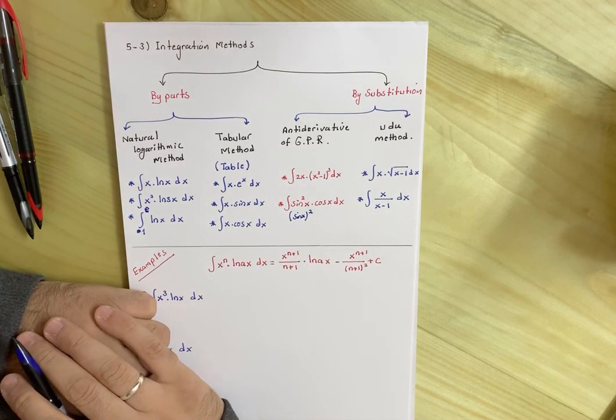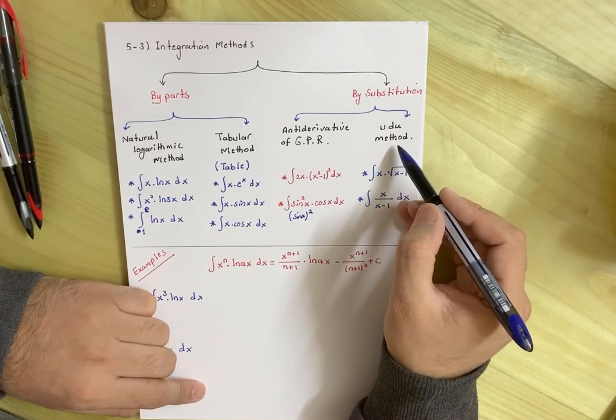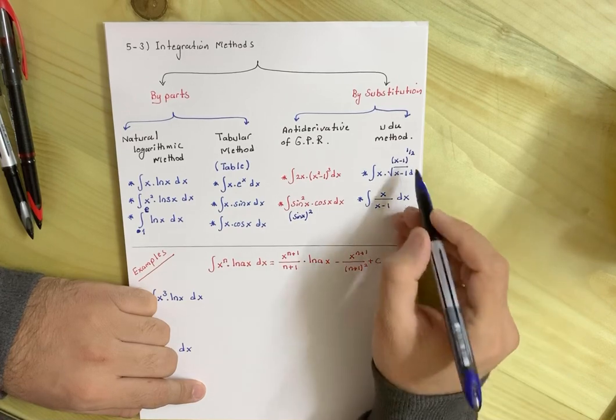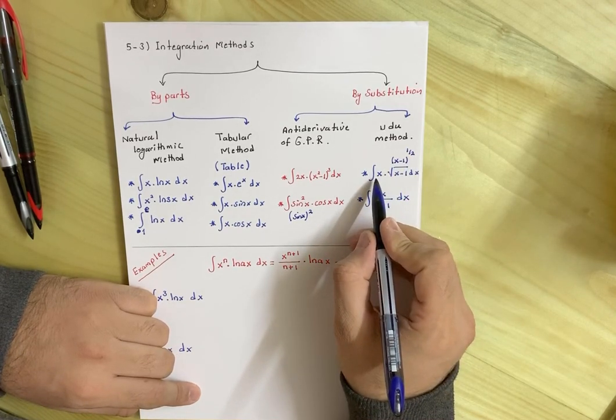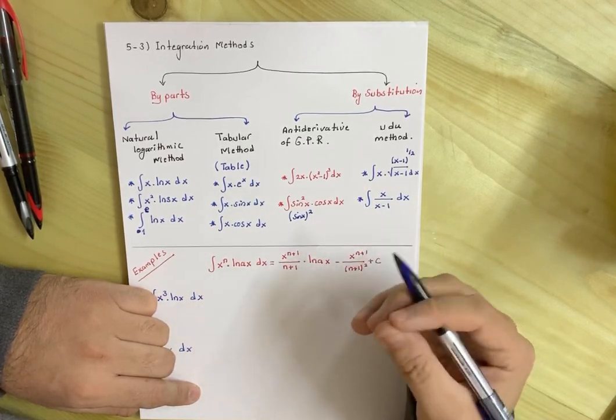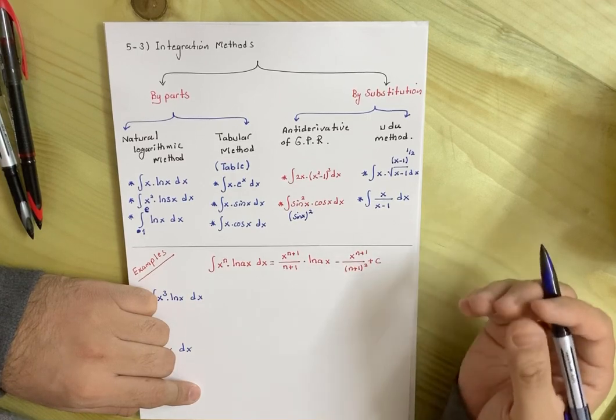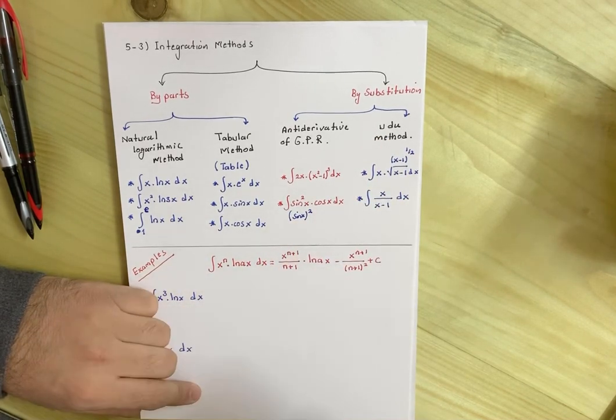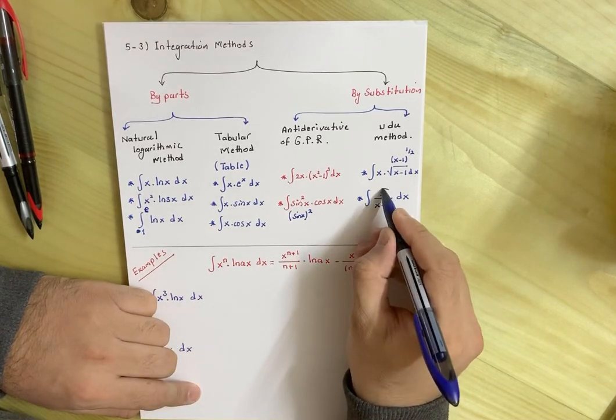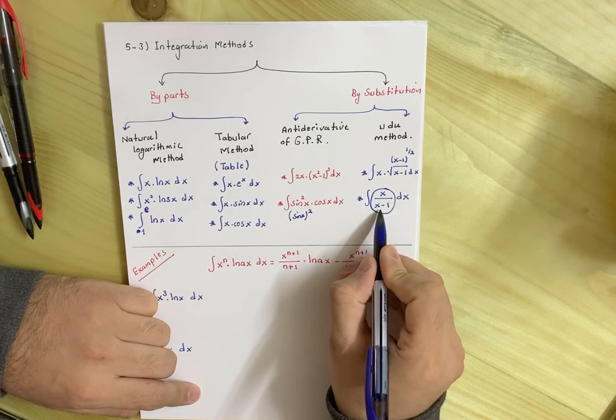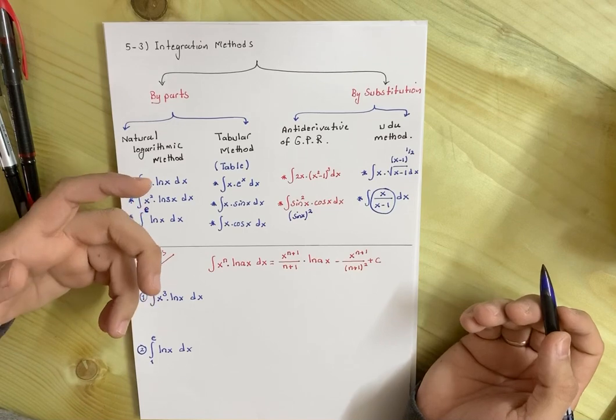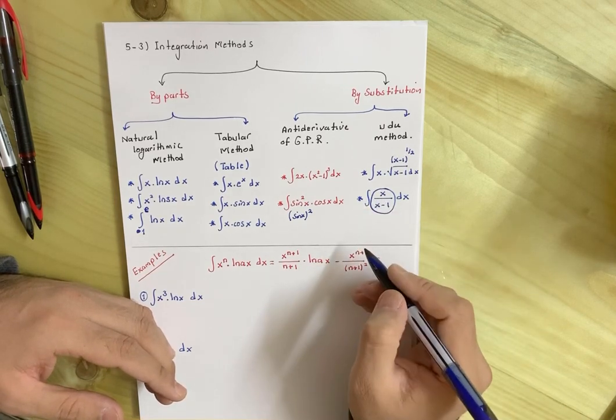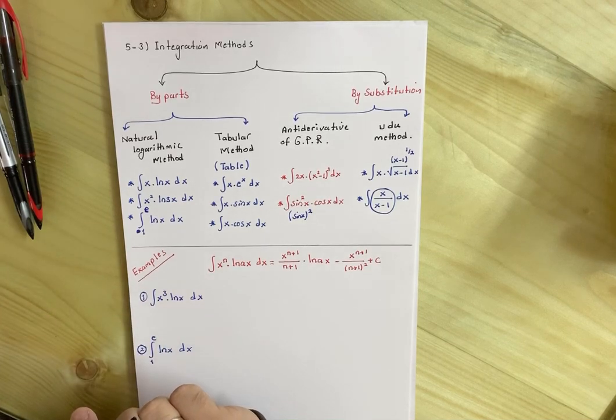Second, udu method or the special method. When do we use this one? When we have a general power, because this one means x minus 1 to the power 1 over 2. We used to say that when we have derivative of inside the square root, it's 2 over 3 times f(x) times square root of f(x) plus c. But here there's a problem: derivative of x minus 1 is not x, it's 1. So you must use udu method. Again, we used to say that if we see any fraction, we take the derivative of denominator. If it equals the numerator, it's the ln absolute value of denominator. But here, derivative of x minus 1 is 1, but this is x, so it's not equal. So you must use udu method. Thank you for the first part.